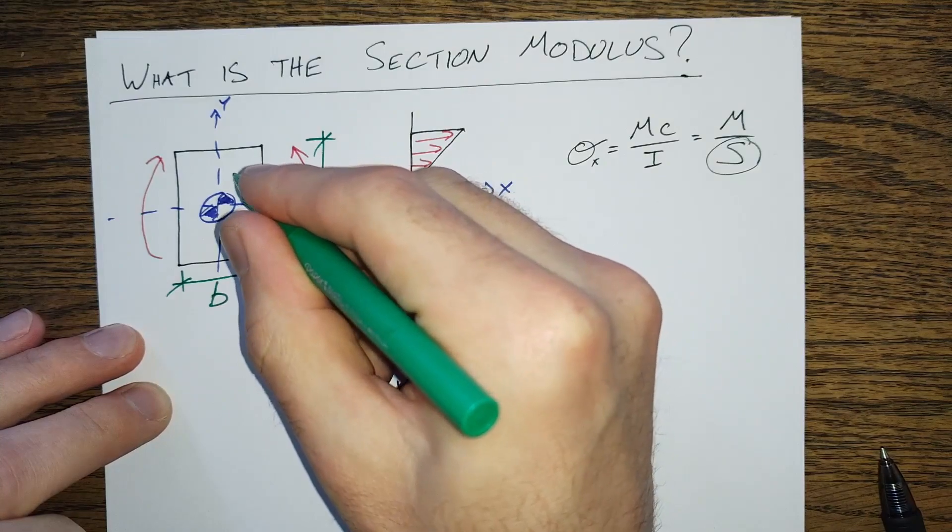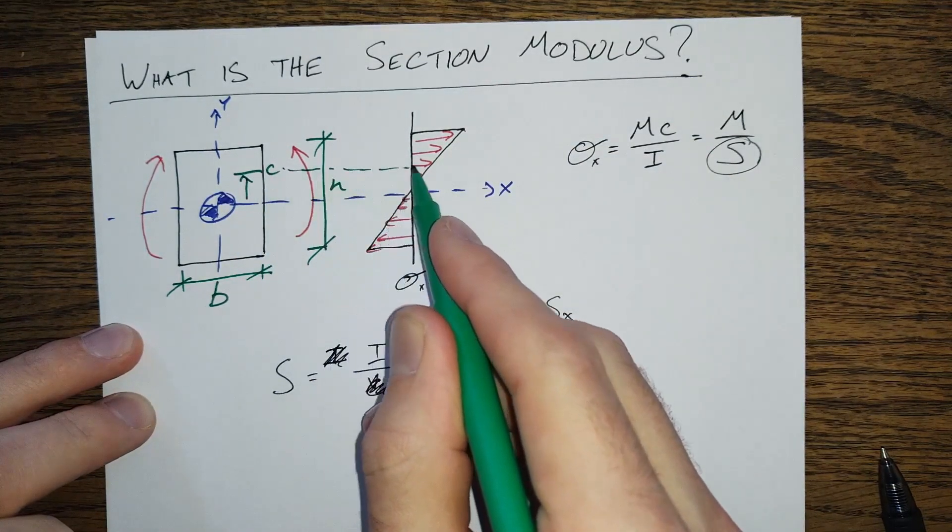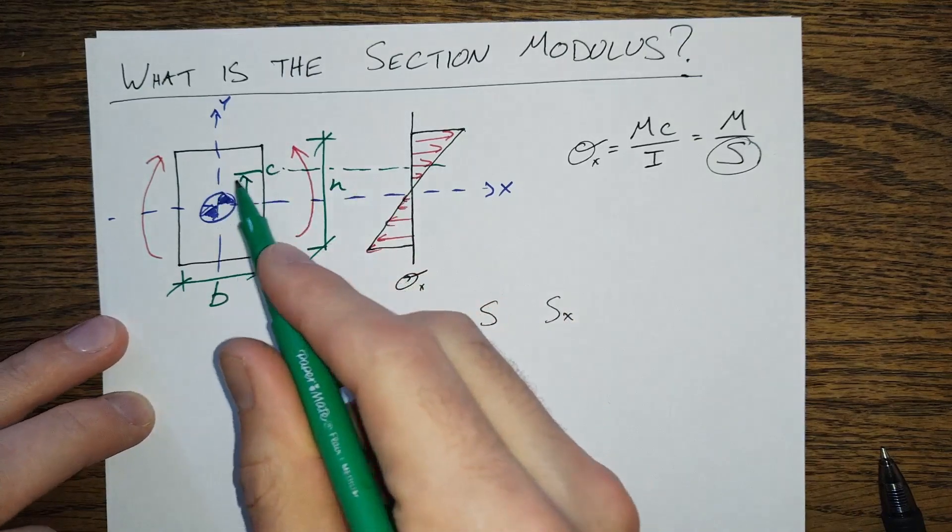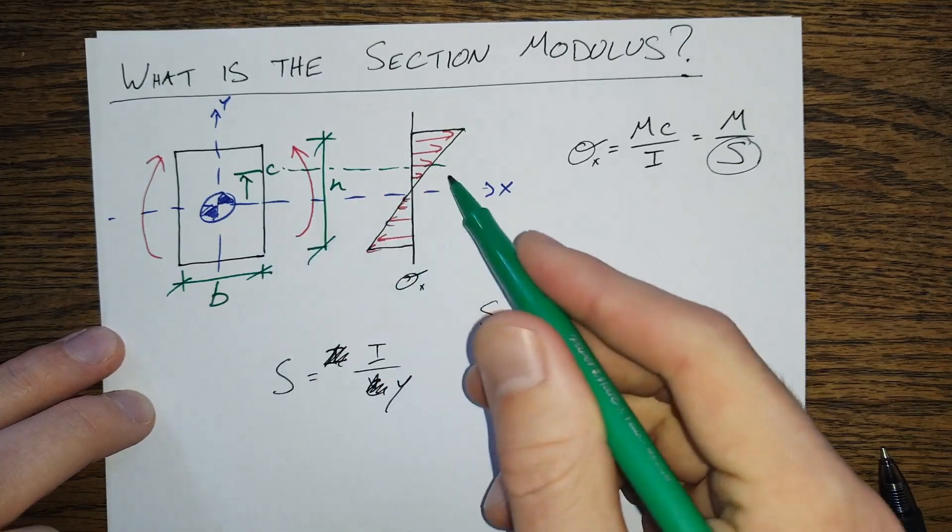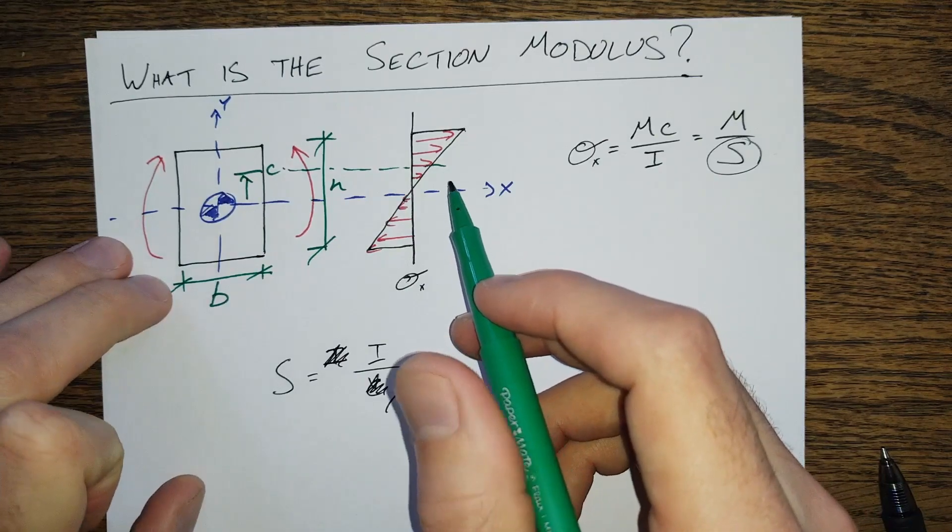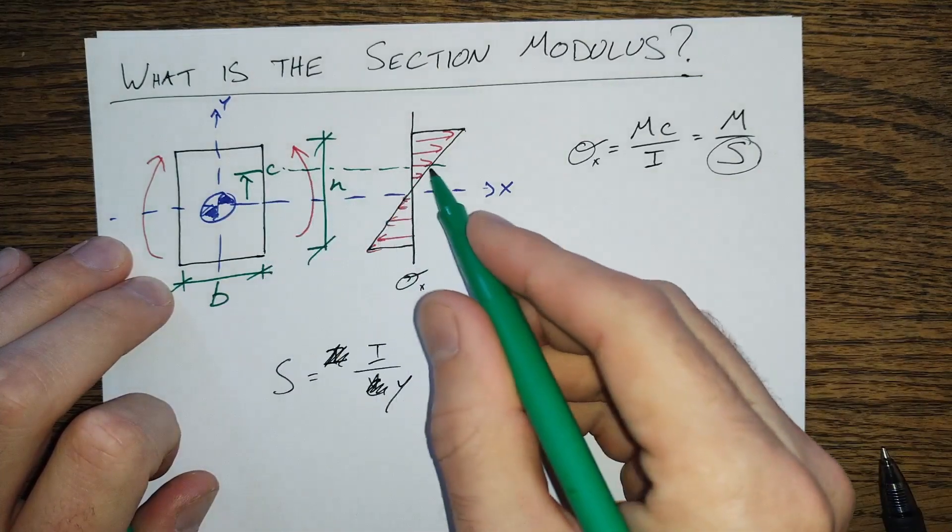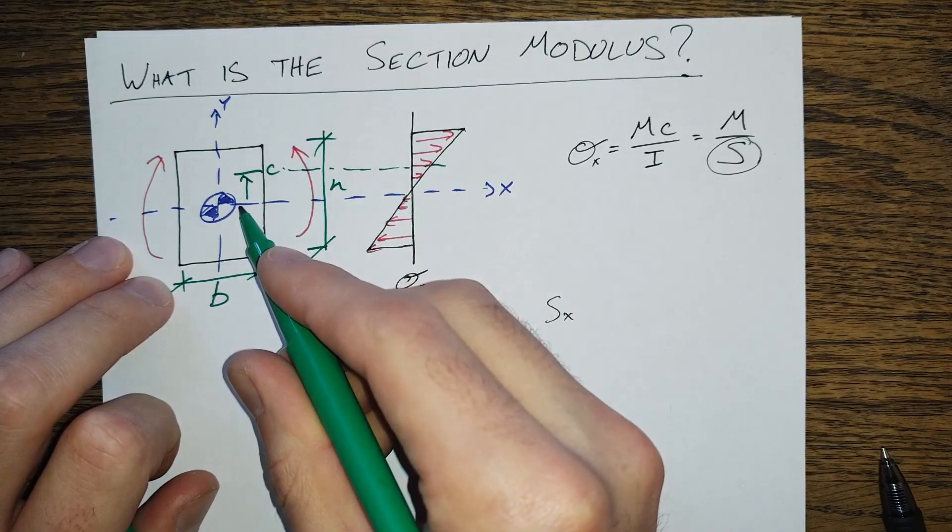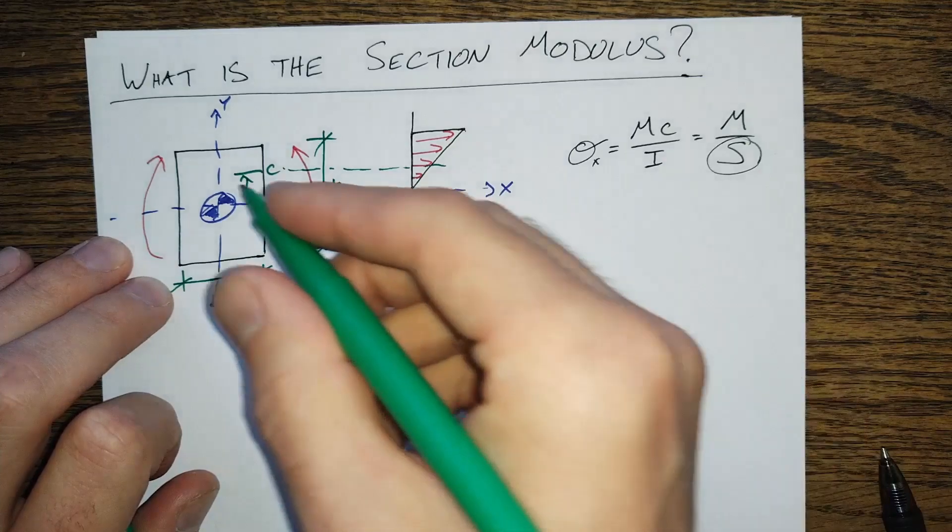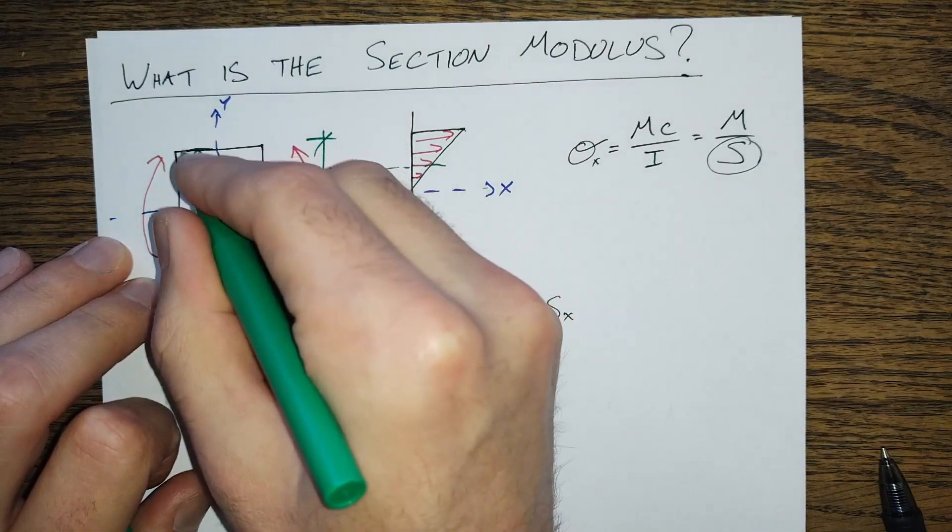We've got a distance C up to our stress point here. That distance goes from the neutral axis, and as long as we are elastic, we haven't exceeded the yield stress of the material.